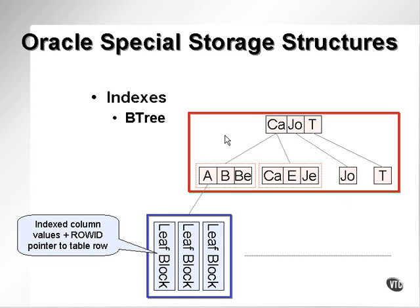Essentially, Oracle B-tree indexes have a maximum of two branch levels and leaf blocks.